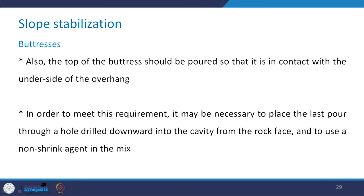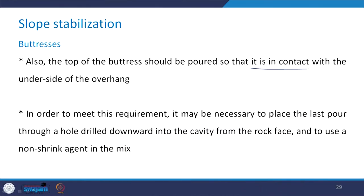In order to meet this requirement, it may be necessary to place the last pour through a hole drilled downward into the cavity from the rock face, and to use a non-shrink agent in the mix, so that the buttress remains in contact with the underside of the overhang. If this contact is not established, the purpose of providing the buttress will not be served.